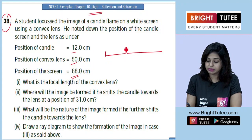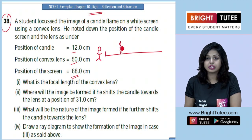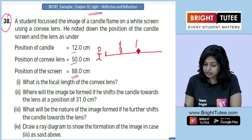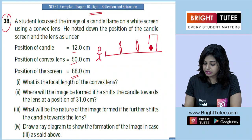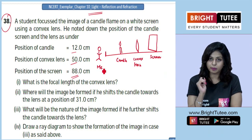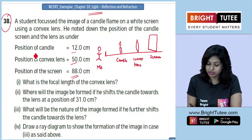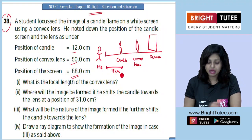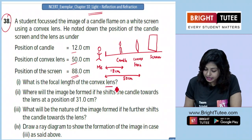A student focused the image of a candle flame on a white screen using a convex lens. Let's say the student is standing here, the candle is placed here, there is a convex lens fixed on a frame in front of the candle, and he is focusing it on a white screen. So we have the screen, the convex lens, the candle, and the observer. The position of the candle is 12 cm, the convex lens is at 50 cm, and the screen is at 88 cm.